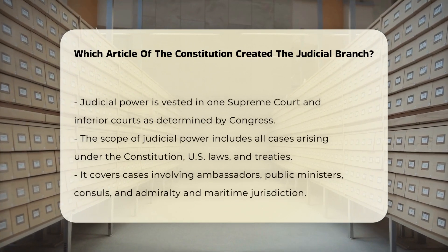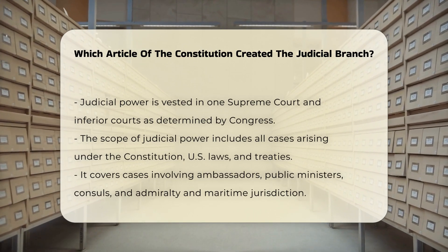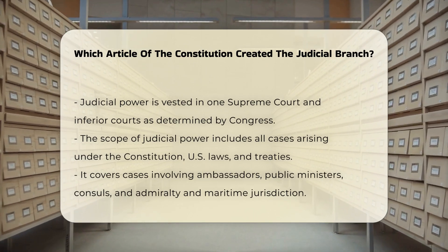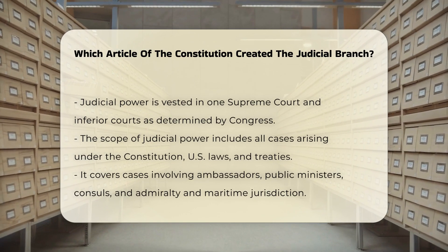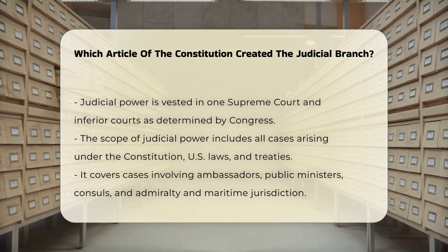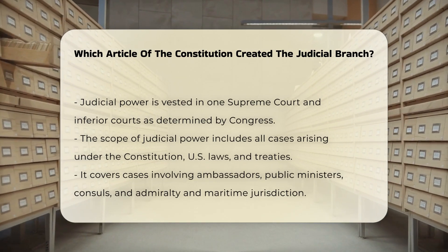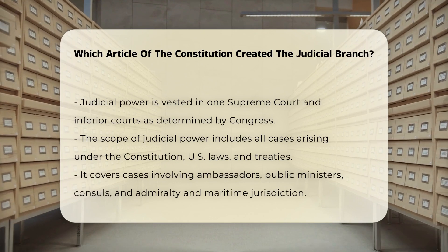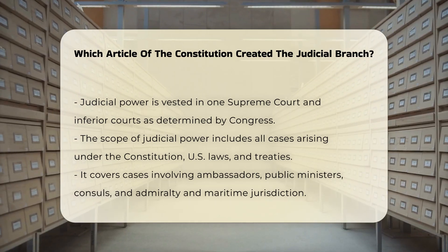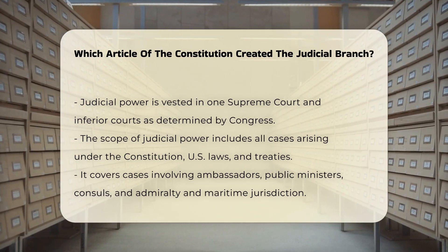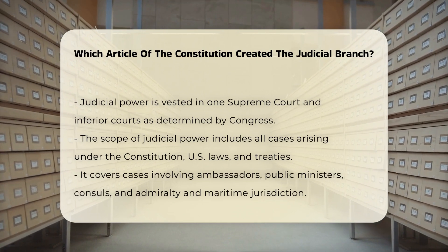The article also defines the scope of the judicial power, extending to all cases in law and equity arising under the Constitution, the laws of the United States, and treaties made under their authority. It includes cases affecting ambassadors, public ministers, and consuls, as well as cases of admiralty and maritime jurisdiction.